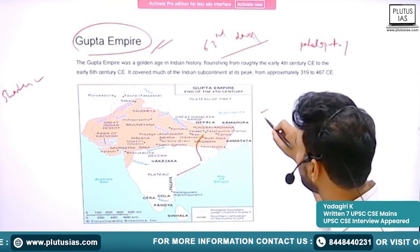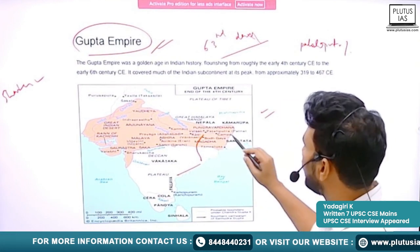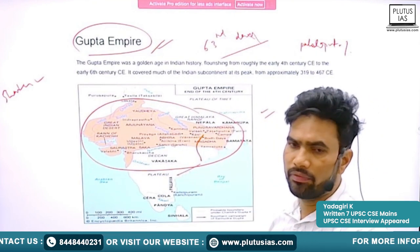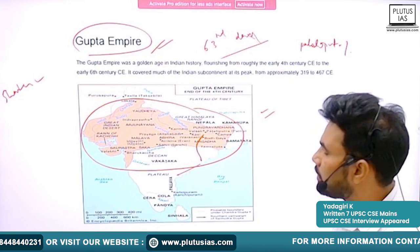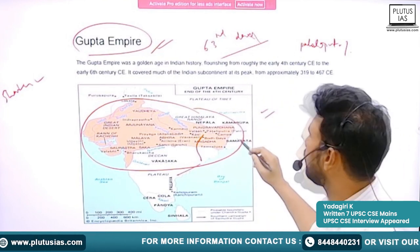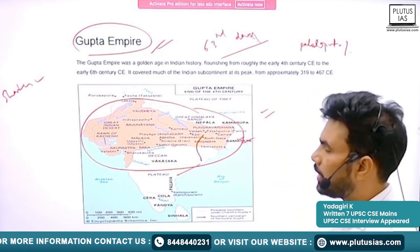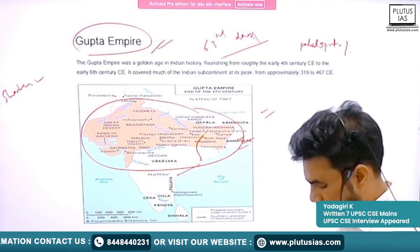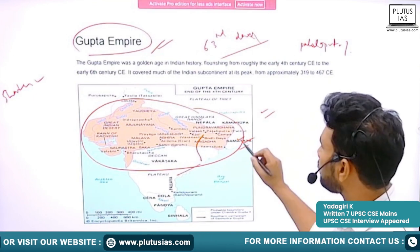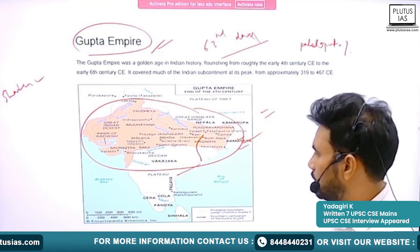After the Mauryas, the Guptans had the greatest territorial extent until the time of the Delhi Sultanate or the Mughal Empire. They had control over most parts of the country after the Mauryas.